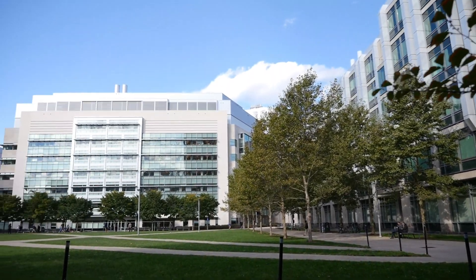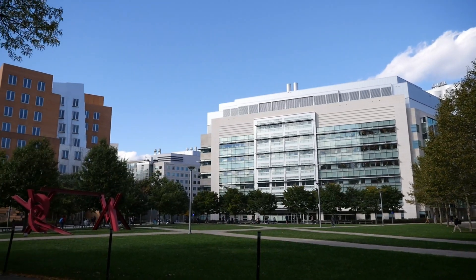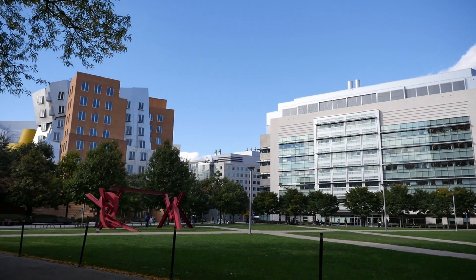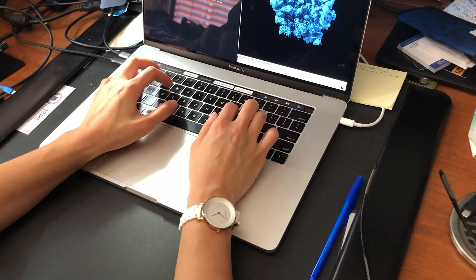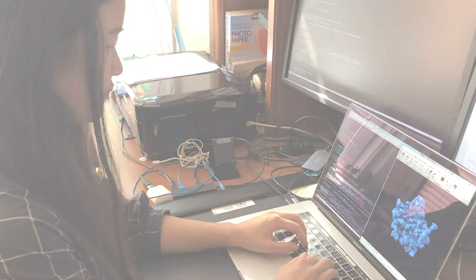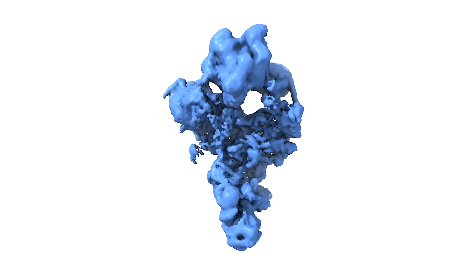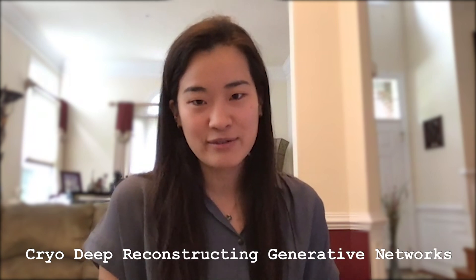So in collaboration with the MIT Abdul Latif Jamil Clinic, or J Clinic, for machine learning and health, we've created the first deep neural network capable of extracting these molecular motions from cryo-EM data. And in doing so, reconstruct 3D models of these molecules in motion. It's called CryoDRGN, which stands for Deep Reconstructing Generative Networks.